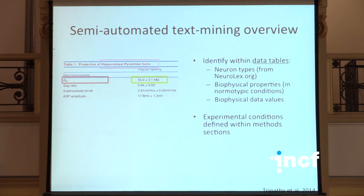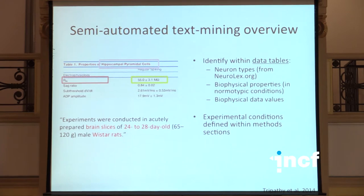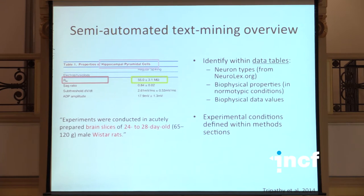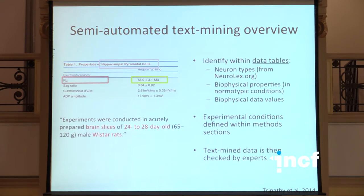After extracting the electrophysiology data, we also extract basic information about how the experiment was collected. For example, from a methods section we extract that experiments were done in brain slices, in vitro, in rats of a certain age and strain like Worcester rats. Because text mining is very error prone and the literature is diverse — people don't use the same terms for things — all extracted data is also checked by experts.